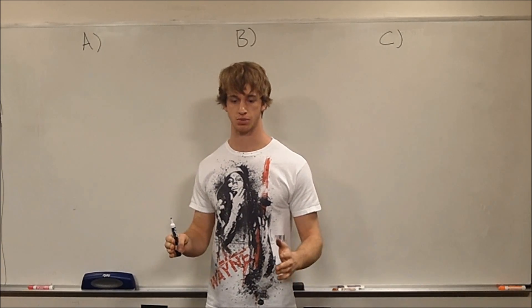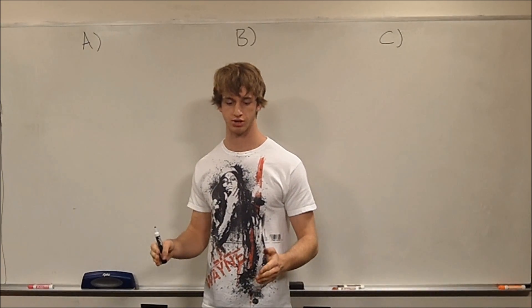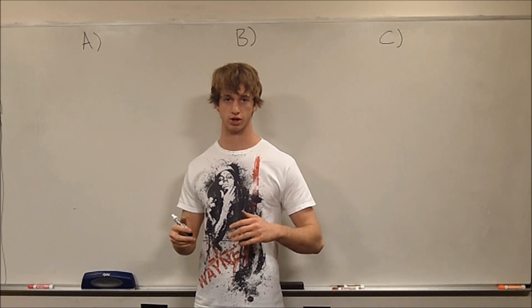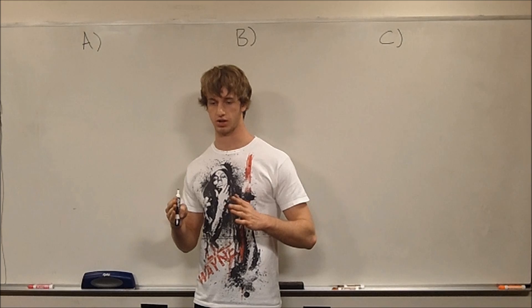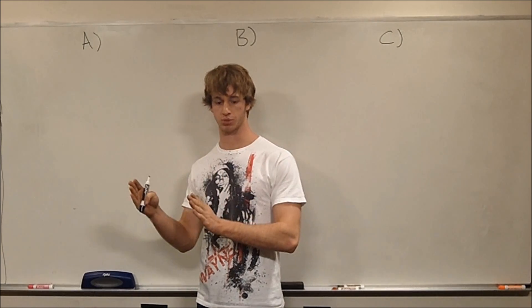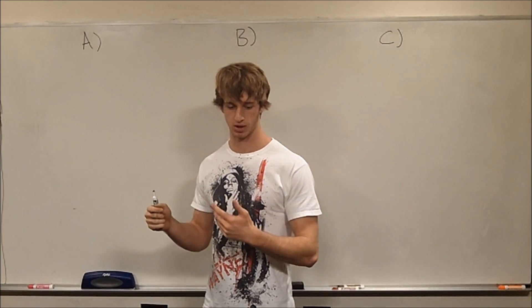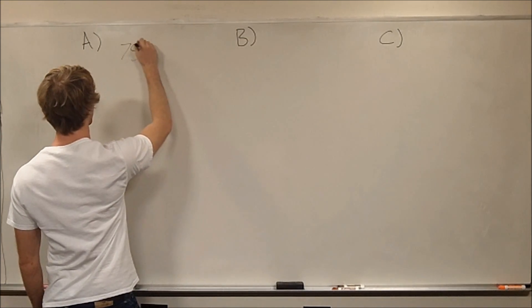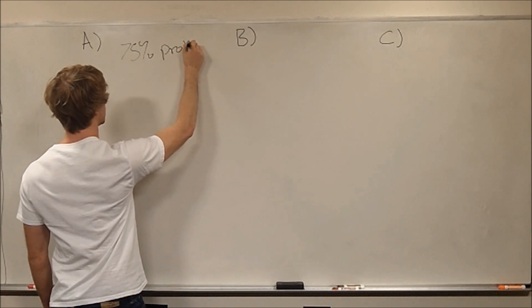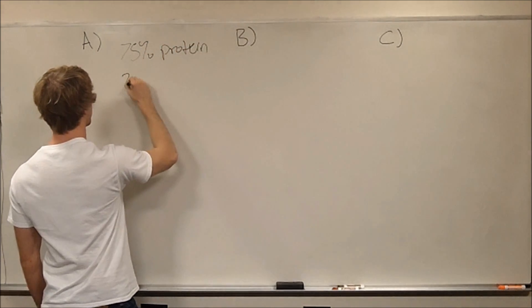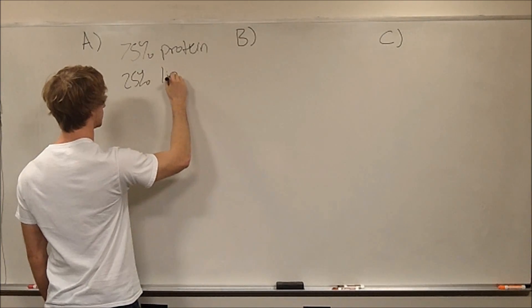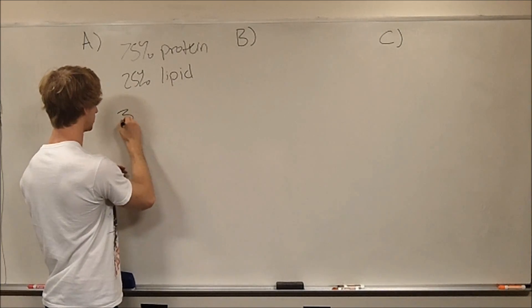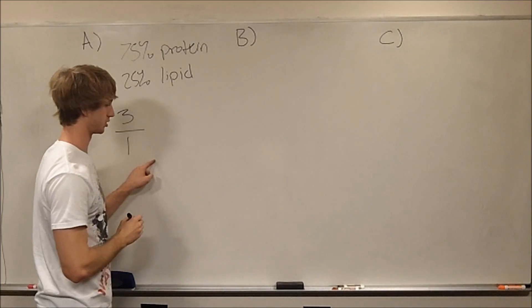We have an E. coli plasma membrane composed of 75% protein and 25% lipid by weight, and we want to find out what the ratio of protein to lipid is. So we're trying to figure out what the total number of proteins to the total number of lipids is. We have by weight 75% protein and 25% lipid. So by weight, we have a ratio of 3 to 1 of protein to lipid.